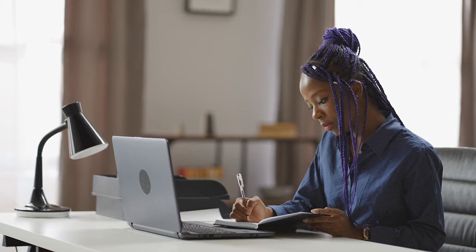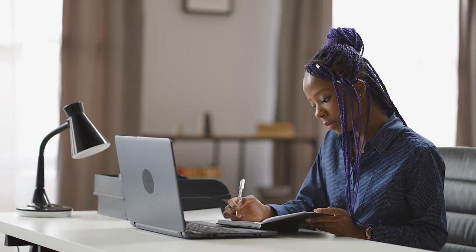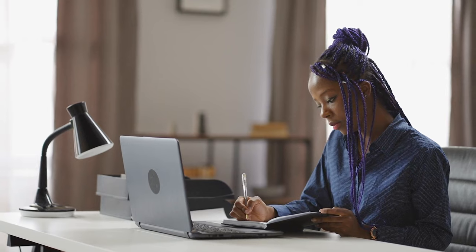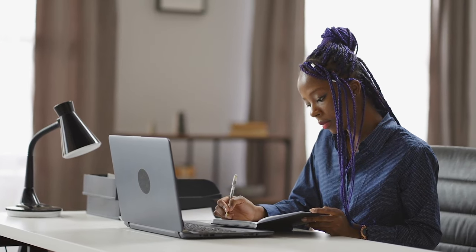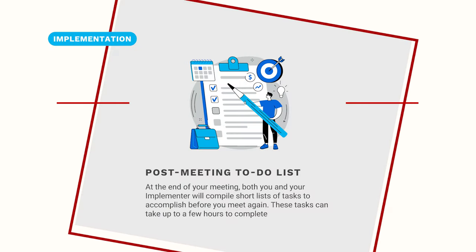At the end of each working session, you will have a to-do list and your implementer will also have a to-do list. Many clients ask how much time they should budget to complete the client to-do list each week. This depends on the project specifics, but on average, clients spend between one to three hours each week working on project tasks.